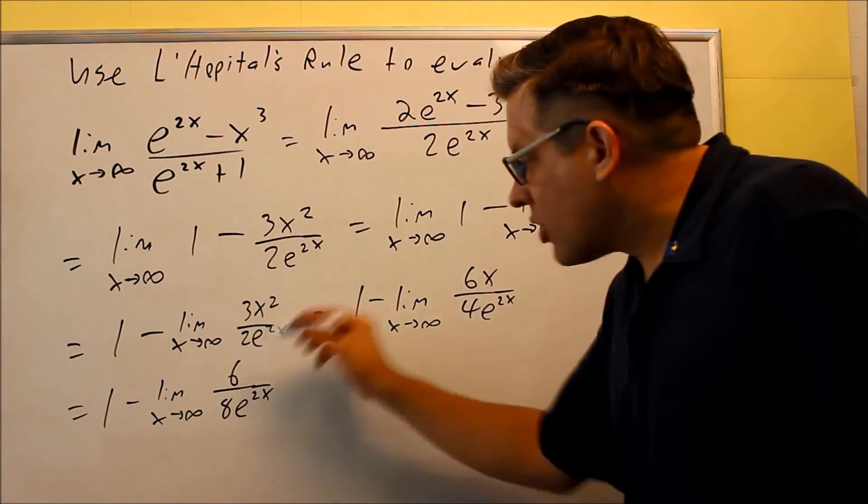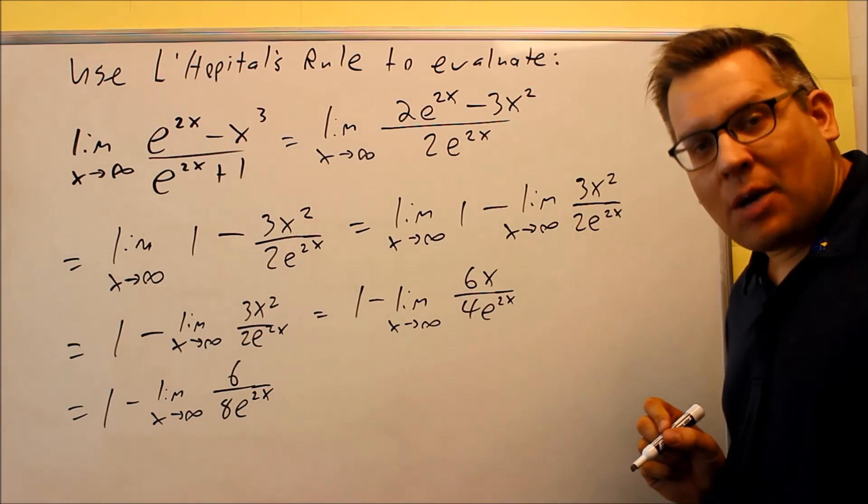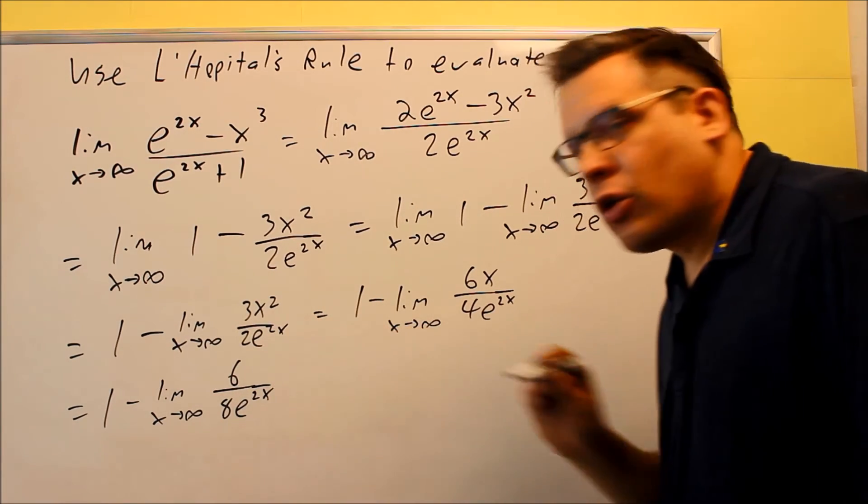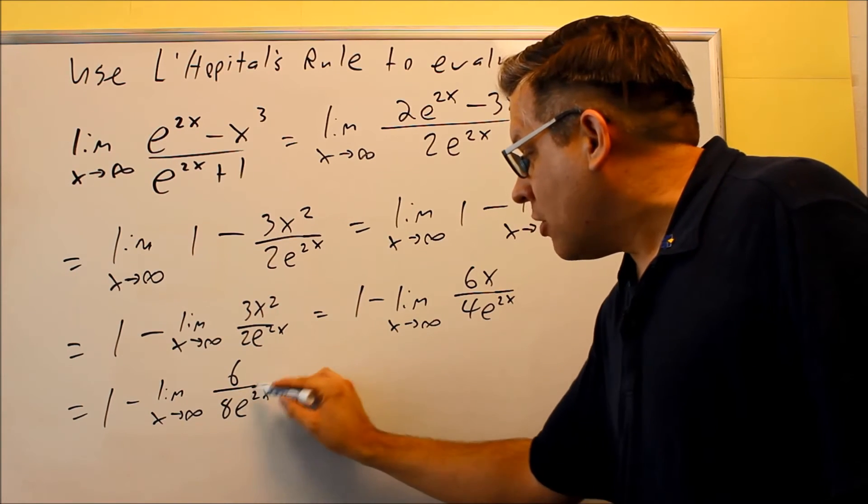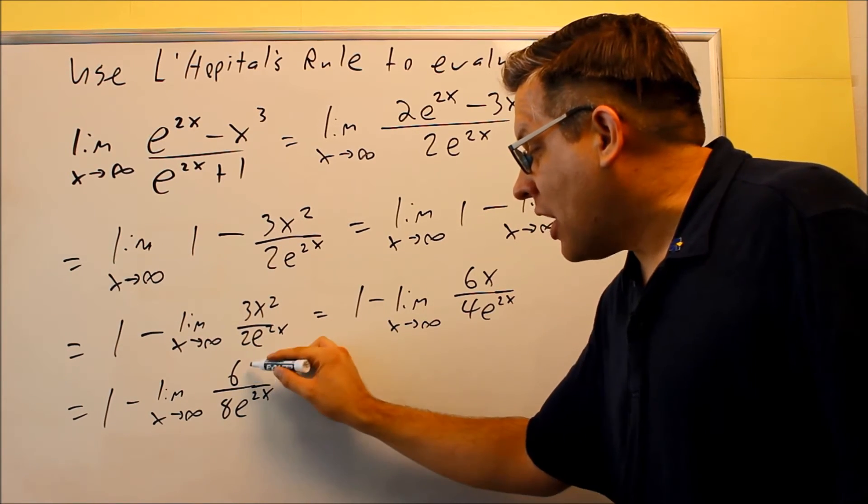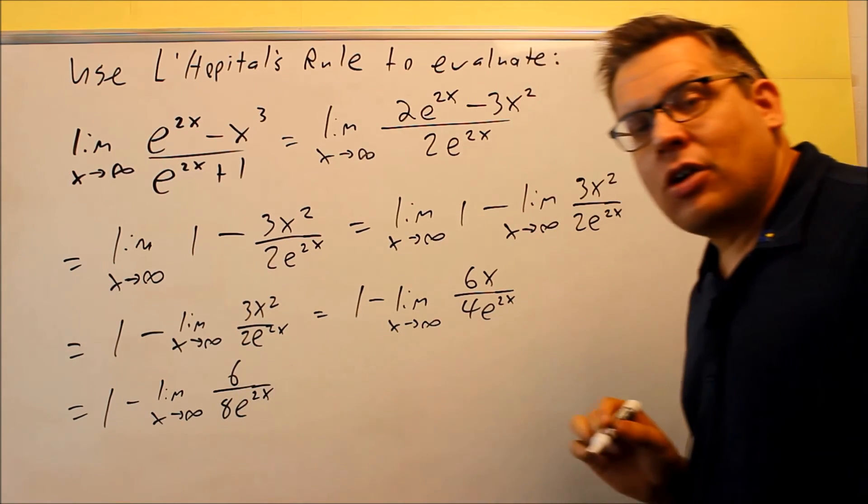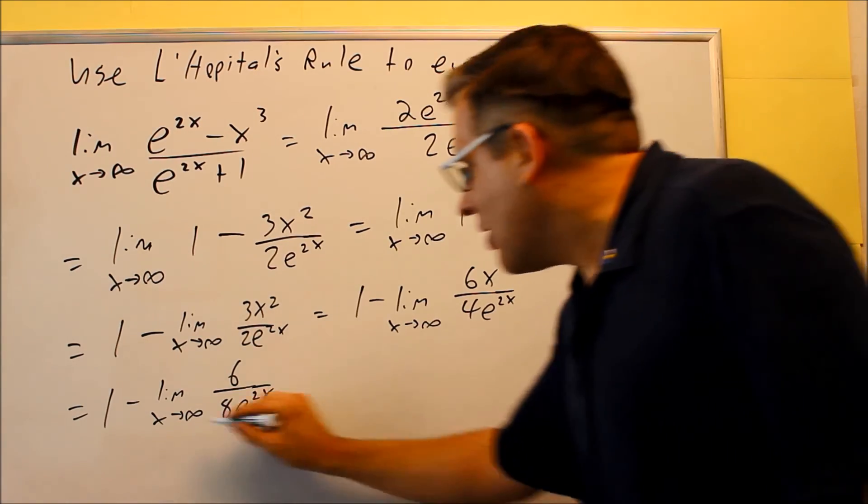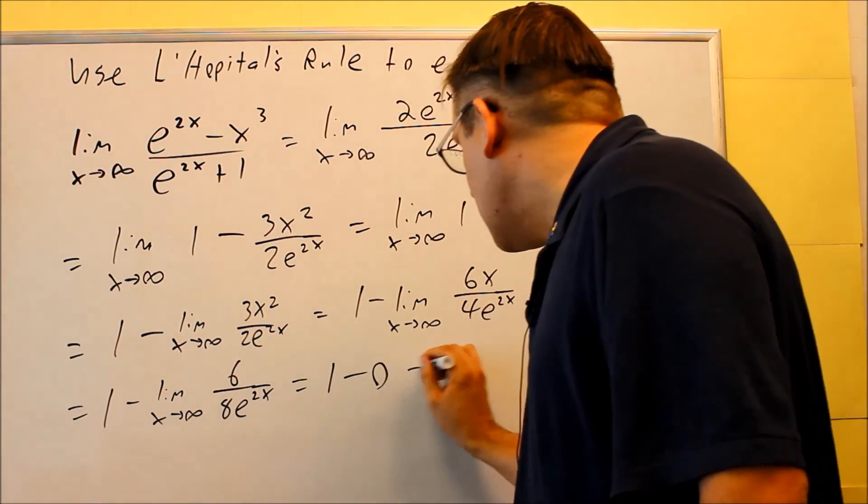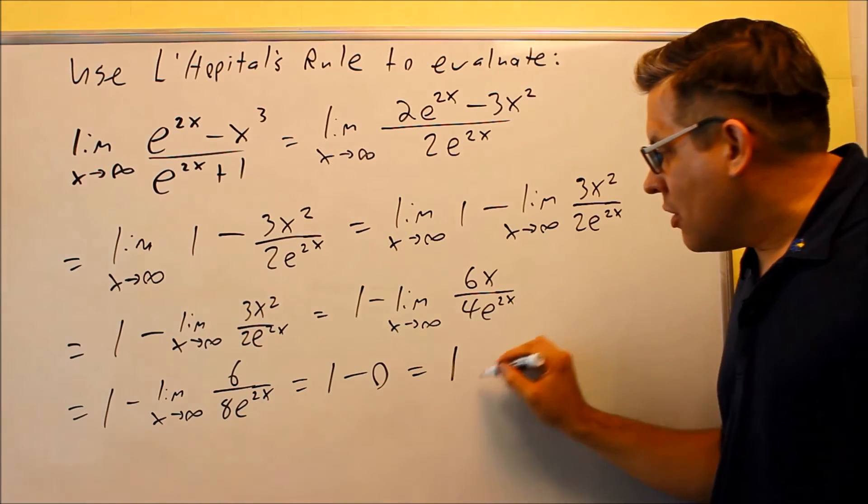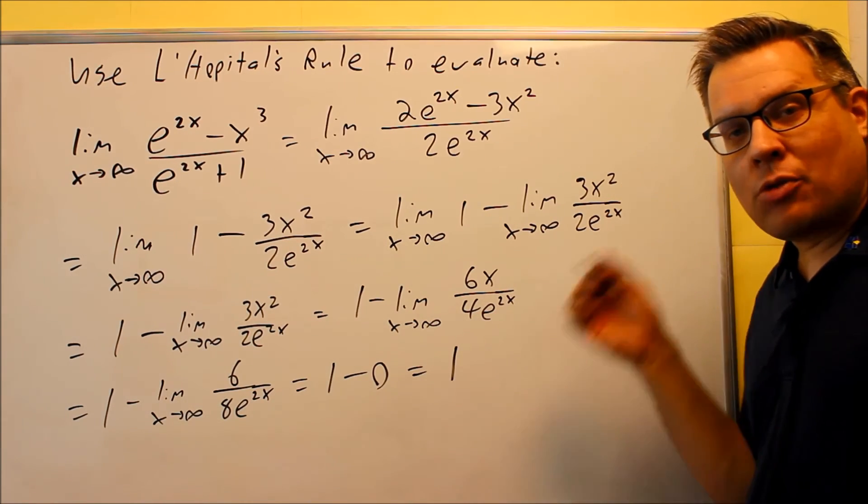Okay, so now we notice that we don't get a 0 on top anymore, which means we don't have to take any more derivatives here. If I put infinity in the bottom, okay, I have a constant over infinity. We talked about that before. This whole part is going to go to 0, which means that your final answer for this whole problem is going to be a 1.